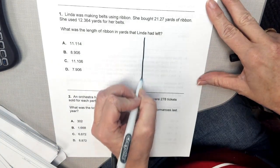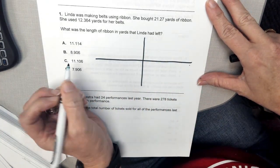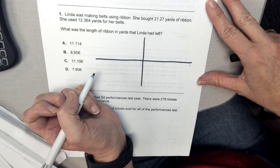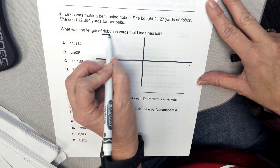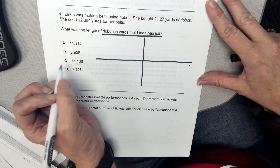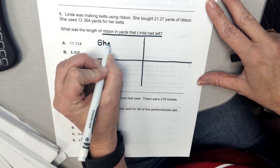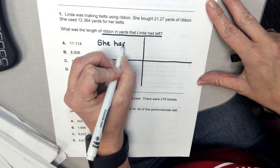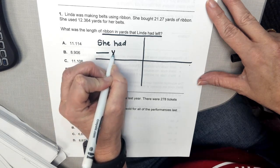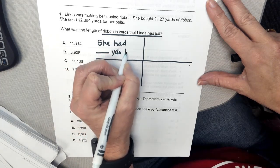So we are going to make a windowpane on this one because we want to know how many yards are left. So we can say, she had yards left.